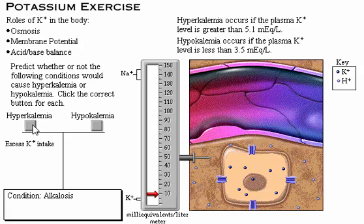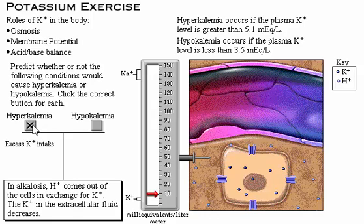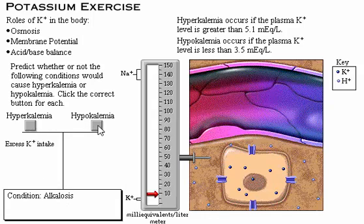In alkalosis, hydrogen ion comes out of the cells in exchange for potassium ion. The potassium ion in the extracellular fluid decreases, leading to hypokalemia.